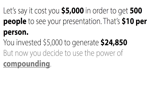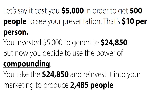But now you decide to use the power of compounding instead of sitting on your laurels thinking, 'okay, that was a good investment, let's try and do it again.' No — you do something bigger and better. You could take $5,000, invest it again, and make another $24,850 if the numbers work out. Or you could use compounding. Here's how it works: you take the $24,850 and reinvest it into your marketing to this time produce 2,485 people at $10 each.